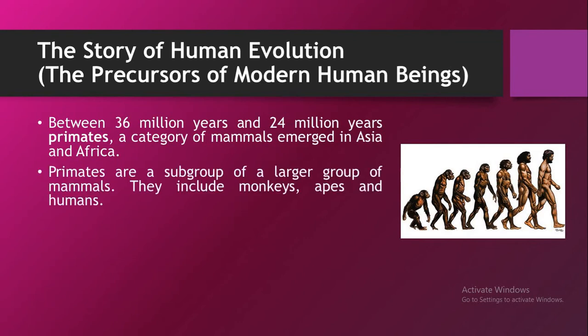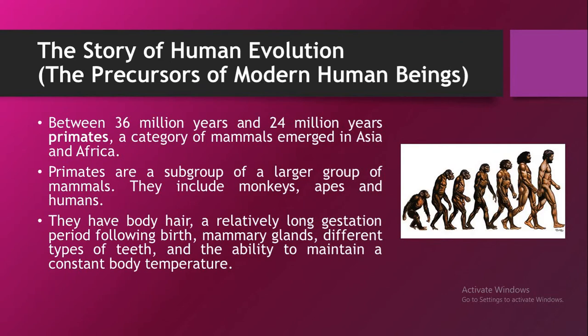Primates are a subgroup of a larger group of mammals. They include monkeys, apes and humans. They have body hair, a relatively long gestation period following birth, mammary glands, different types of teeth, and the ability to maintain a constant body temperature.